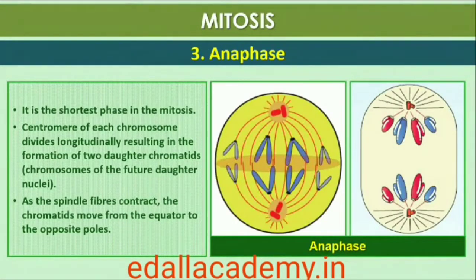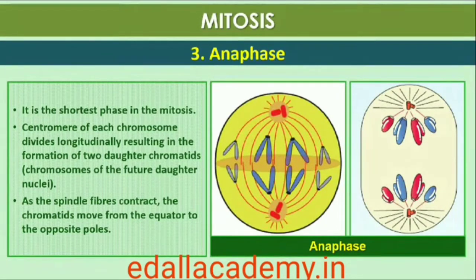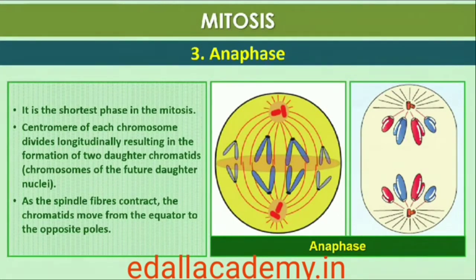At the onset of anaphase, each chromosome arranged at the metaphase plate is split simultaneously, and the two daughter chromatids — now referred to as chromosomes of the future daughter nuclei — begin their migration towards the two opposite poles. As each chromosome moves away from the equatorial plate, the centromere of each chromosome is towards the pole and hence at the leading edge, with the arms of the chromosome trailing behind. Anaphase is characterized by: centromere split and chromatids separate; chromatids move to opposite poles.